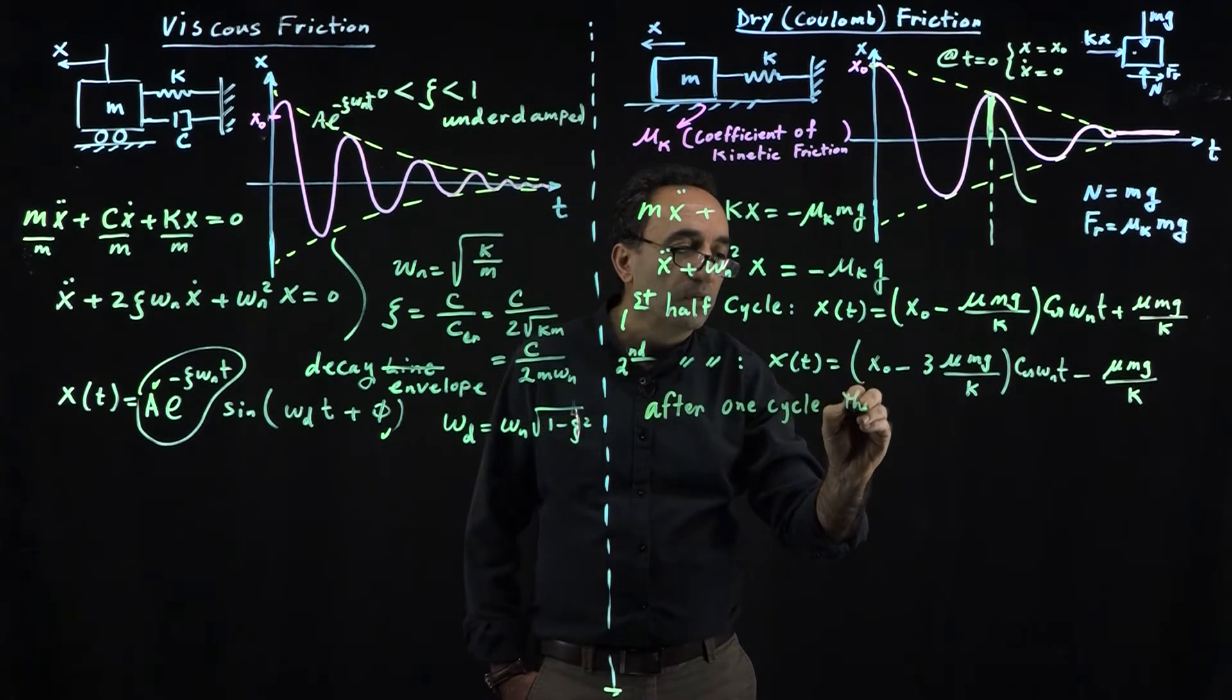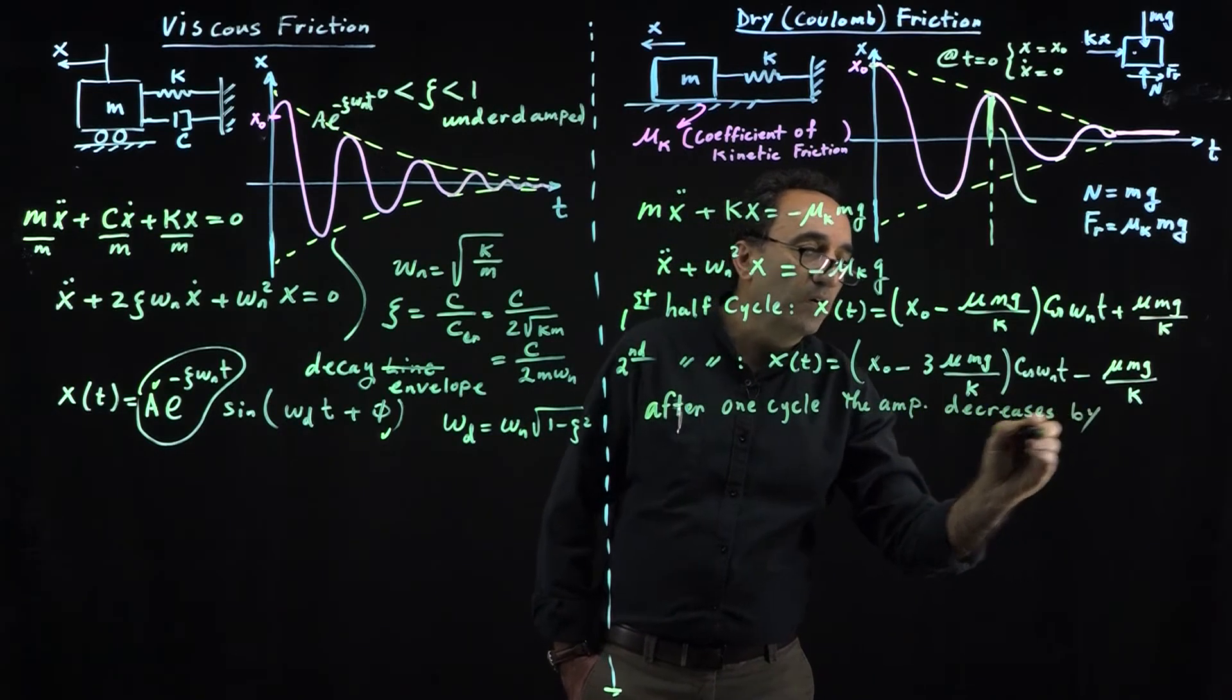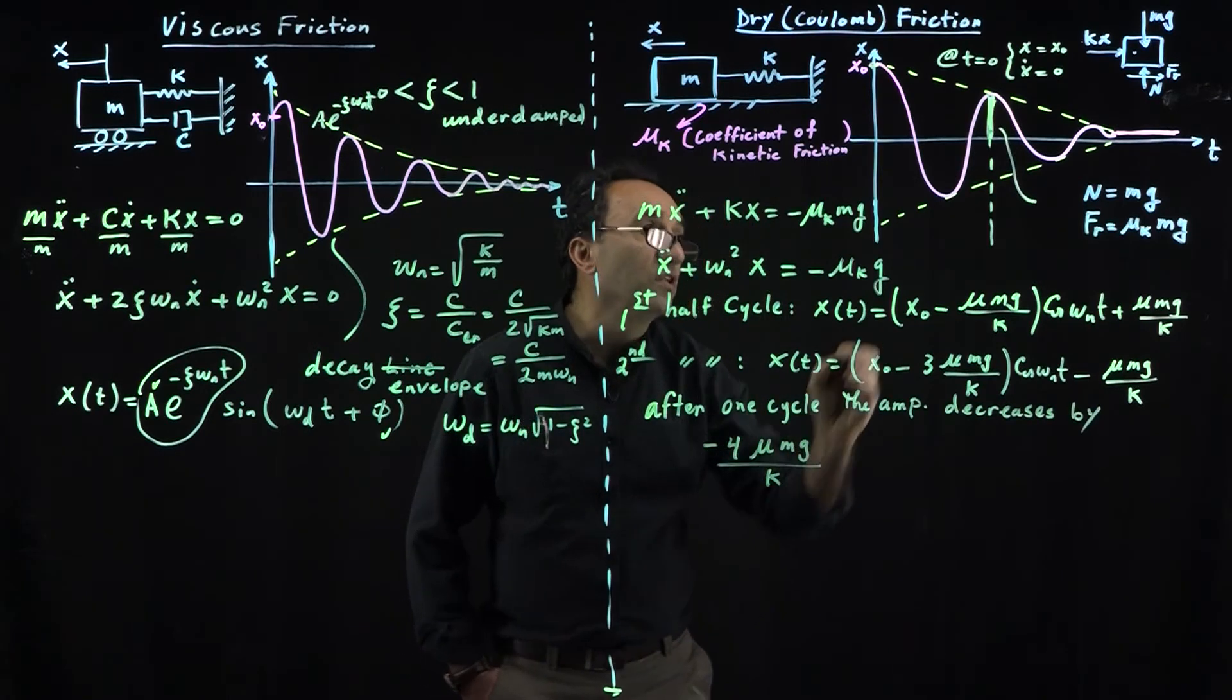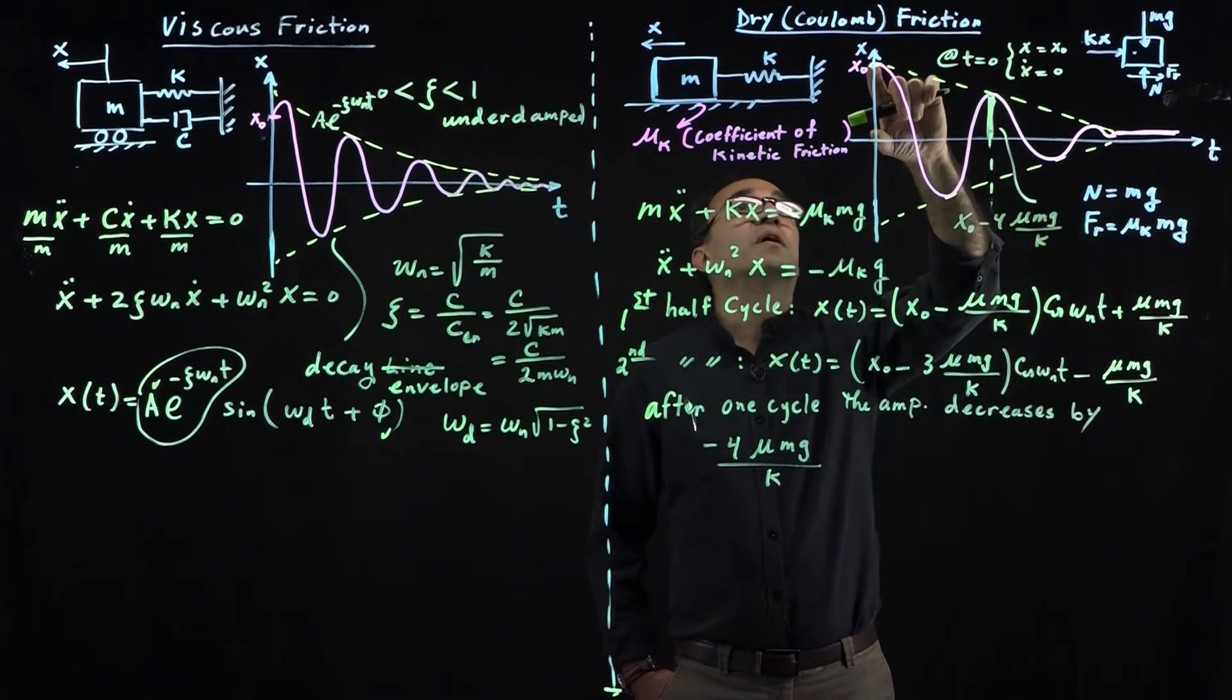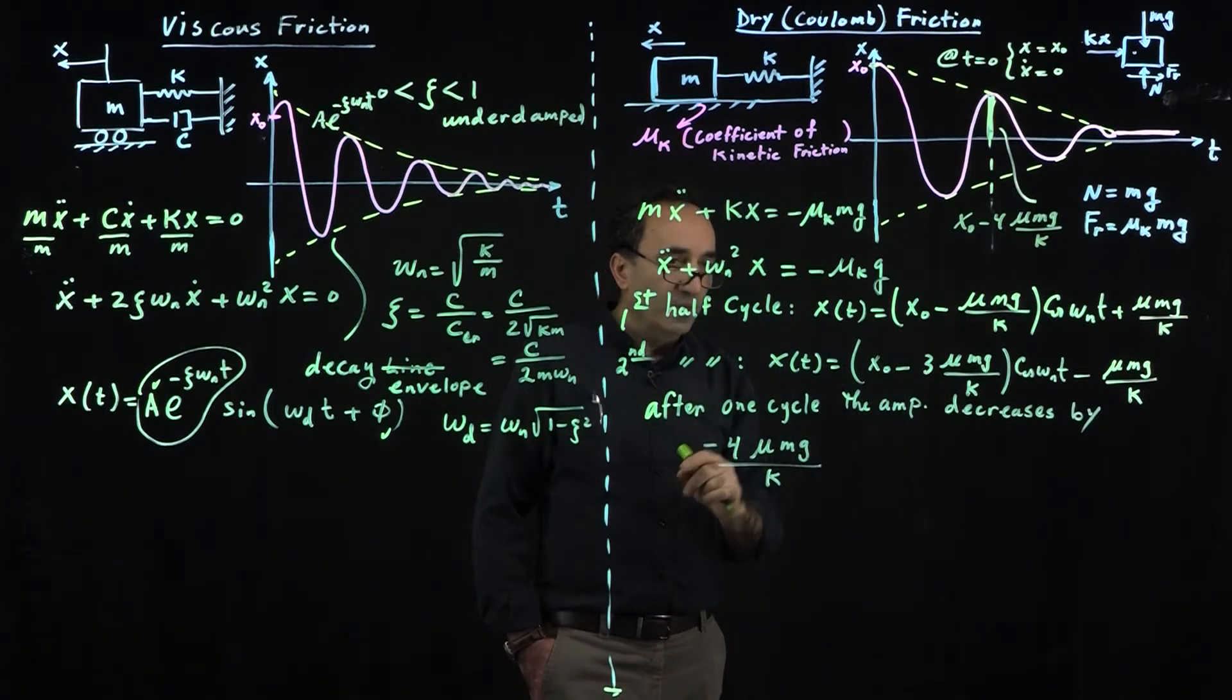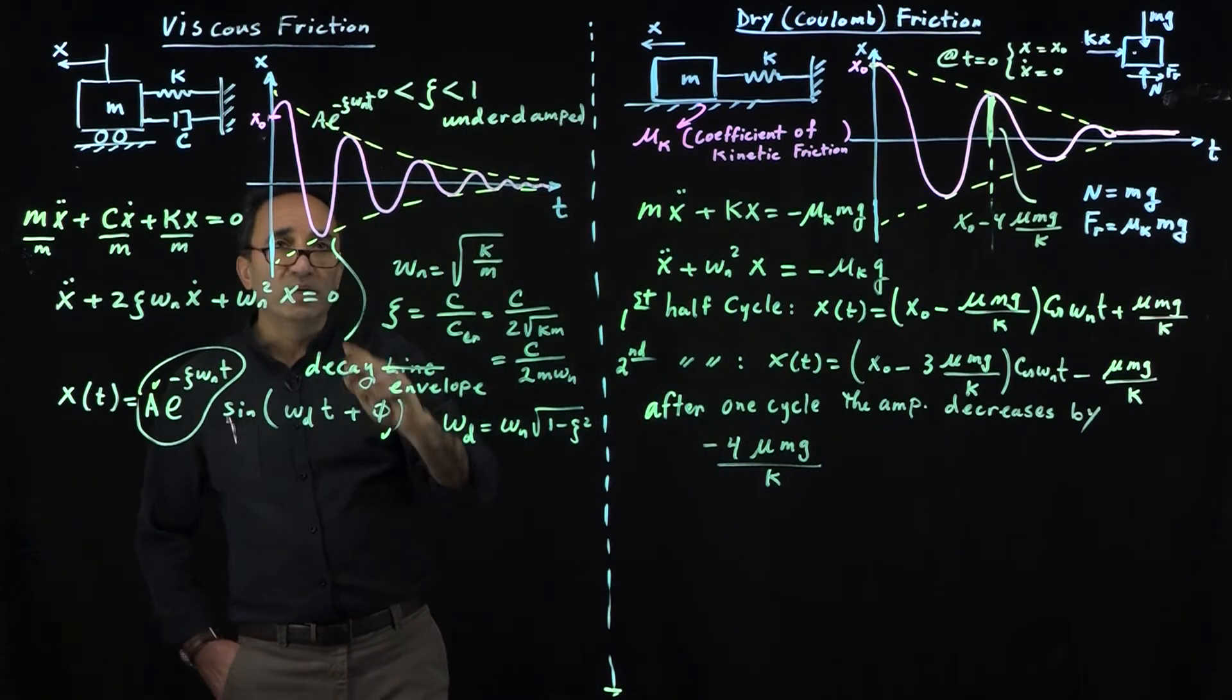Then we get x_0 minus 3, and cosine minus 1 becomes minus 4. So after one cycle, the amplitude decreases by 4 mu mg over k. This is now x_0 minus 4 mu mg over k, and I'll show you a quick example in a minute.